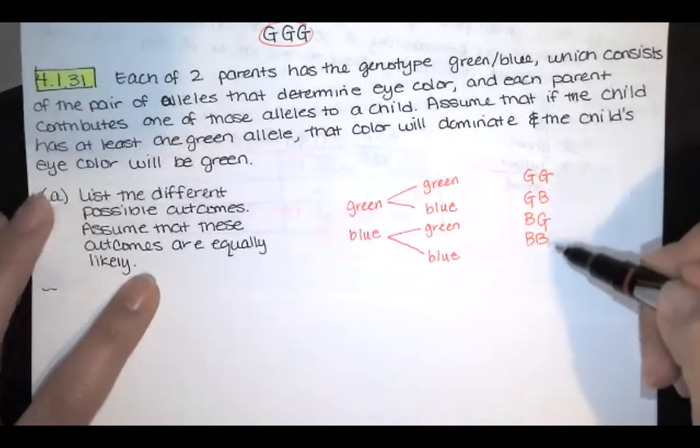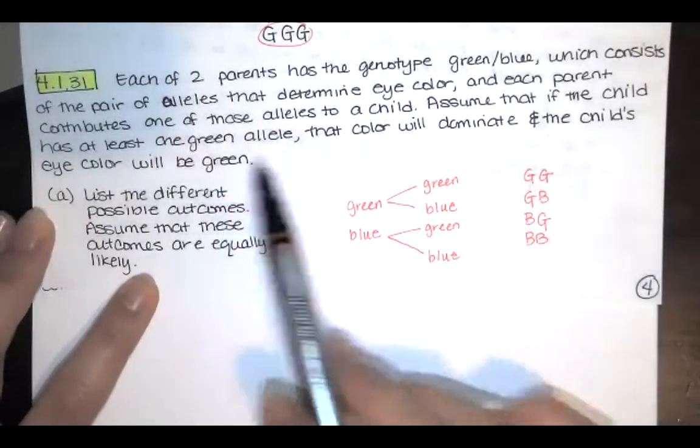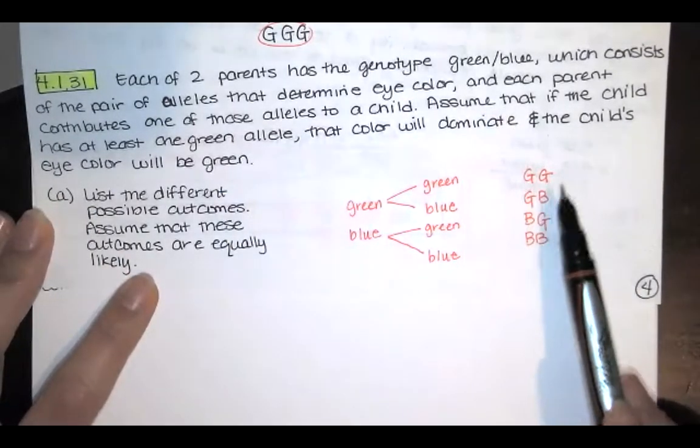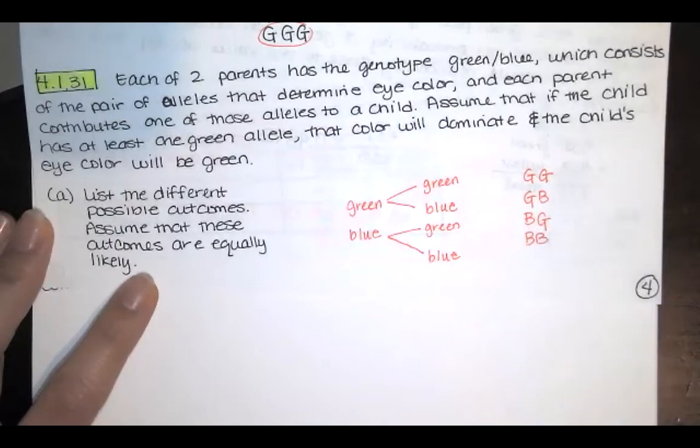And then we could have two blues. So these are the four possible outcomes and they're listing them a little differently. It's green-green, green-blue, blue-green, and blue-blue.